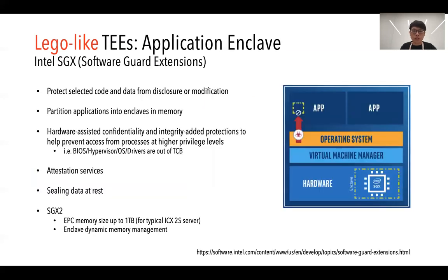The second type is called application enclave. The typical example is Intel SGX, Software Guard Extensions. It can protect select code and data with hardware-assisted confidentiality and integrity support. In other words, all system software and firmware like BIOS, hypervisors, OSes, and drivers are all outside the TCB. It also supports attestation services and sealing services.